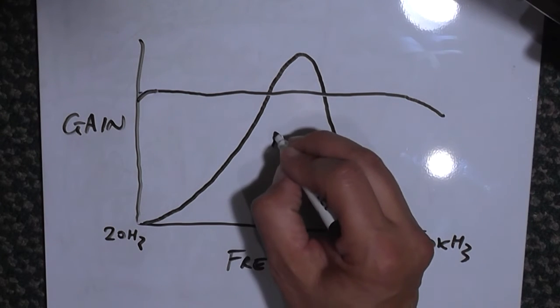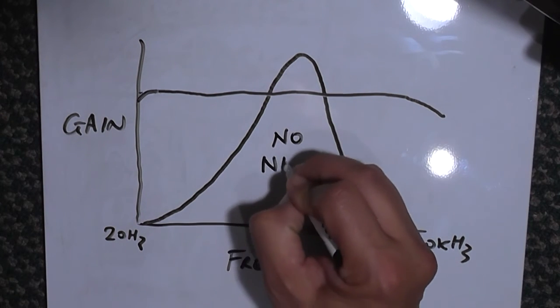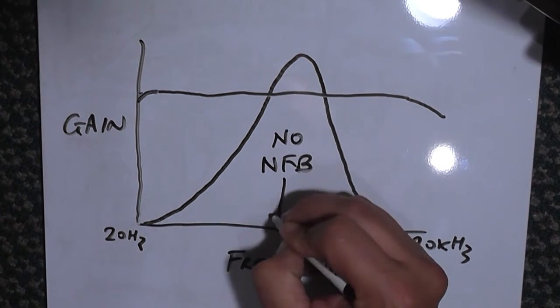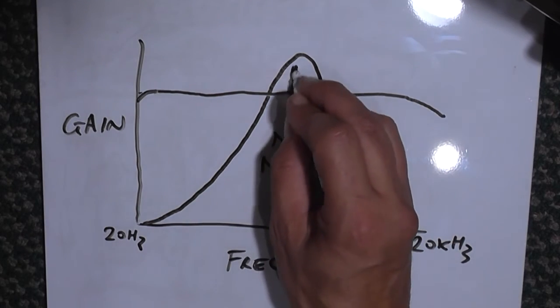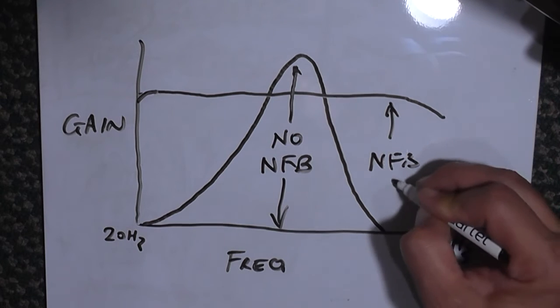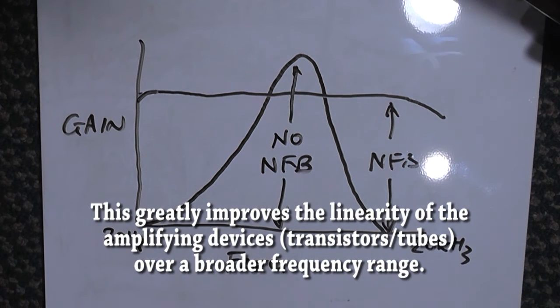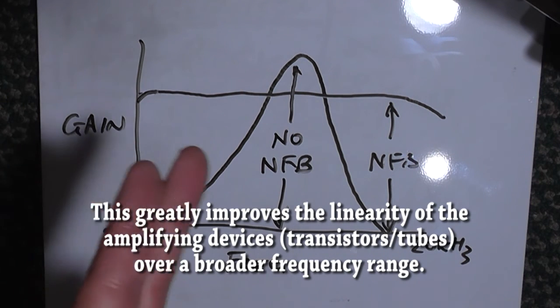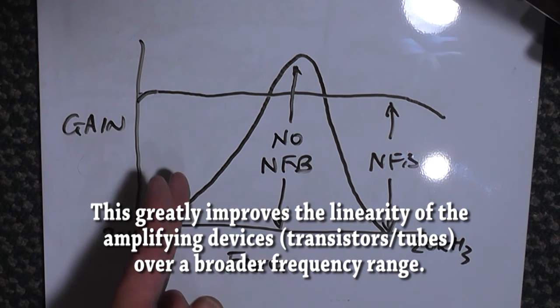So this is no negative feedback, and this is with negative feedback. Essentially what we've done is lowered our gain, but we've improved the amplifier's bandwidth.